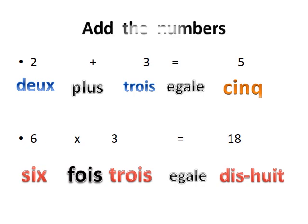Now let us add the numbers. 2 plus 3 equals 5. In French: 2 is pronounced 'deux', plus is 'plus', 3 is 'trois', equals is 'égale', and 5 is 'cinq'. Next: 6 times 3 equals 18. In French: 6 is 'six', times is 'fois', 3 is 'trois', equals is 'égale', and 18 is 'dix-huit'. You have to learn the spelling and pronunciation.